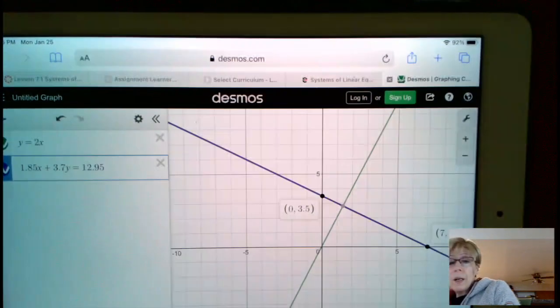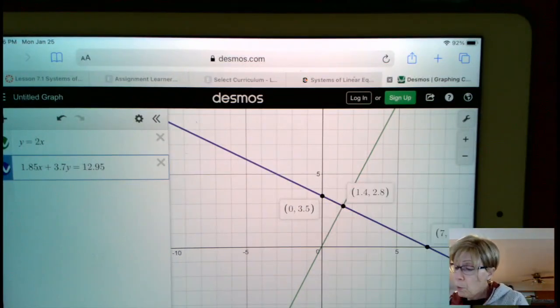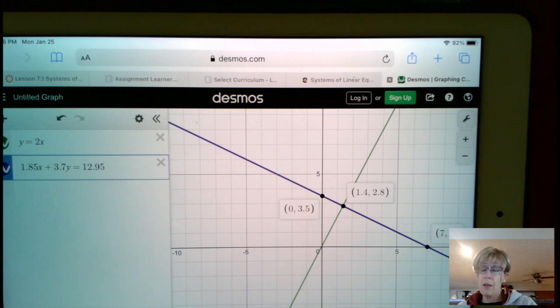And once again, what we've got here is where these two lines intersect means that we bought 1.4 pounds of chicken and 2.8 pounds of beef.